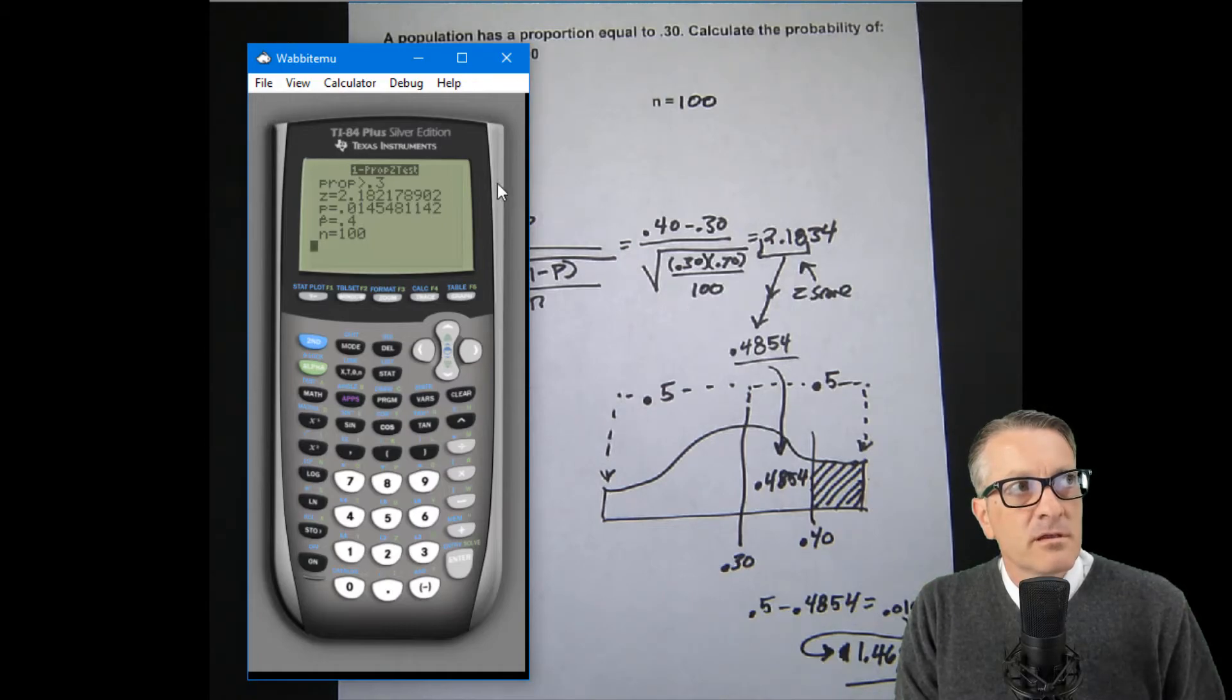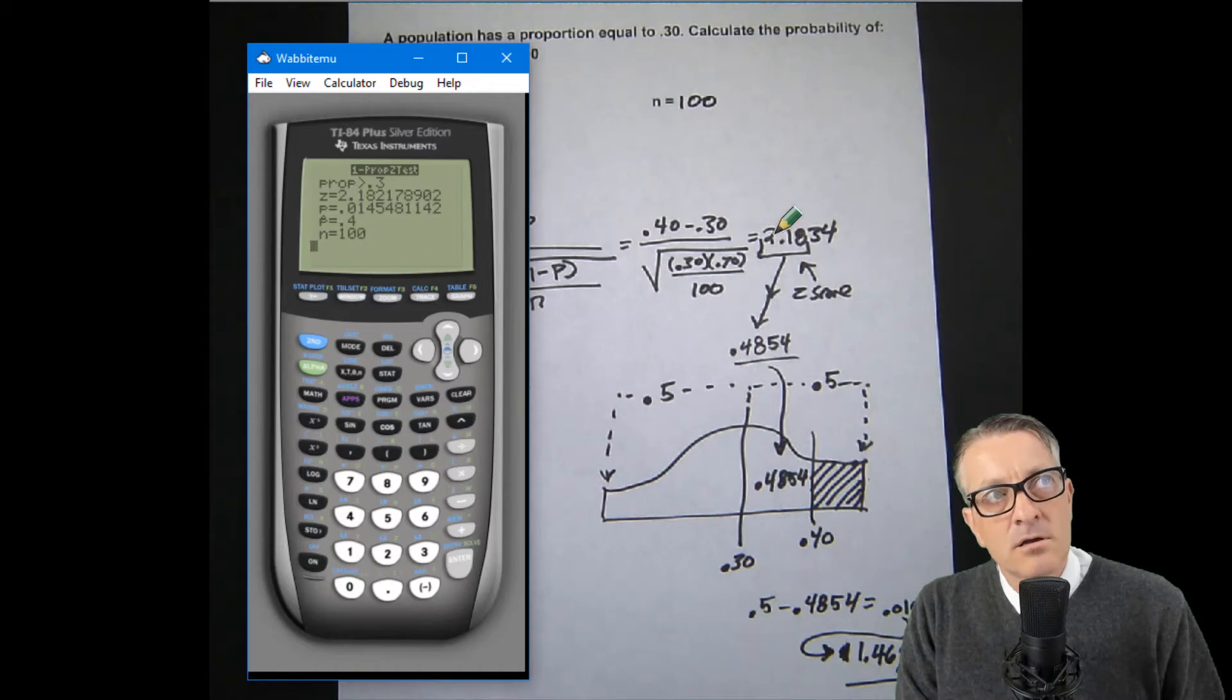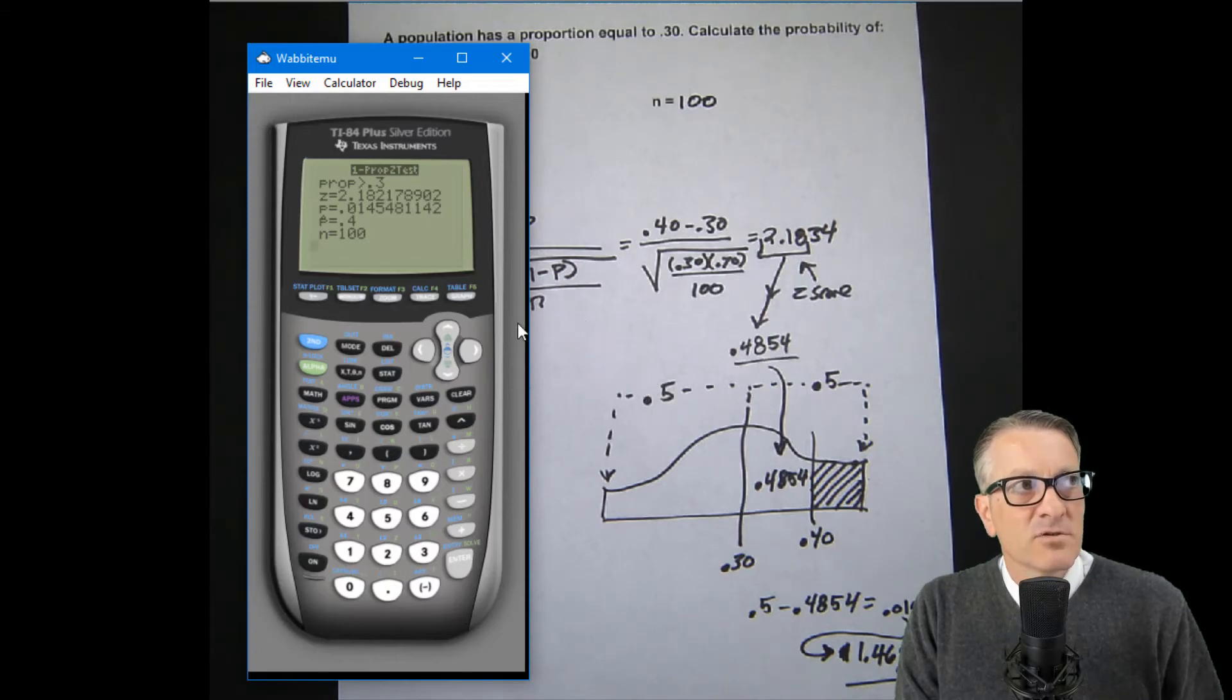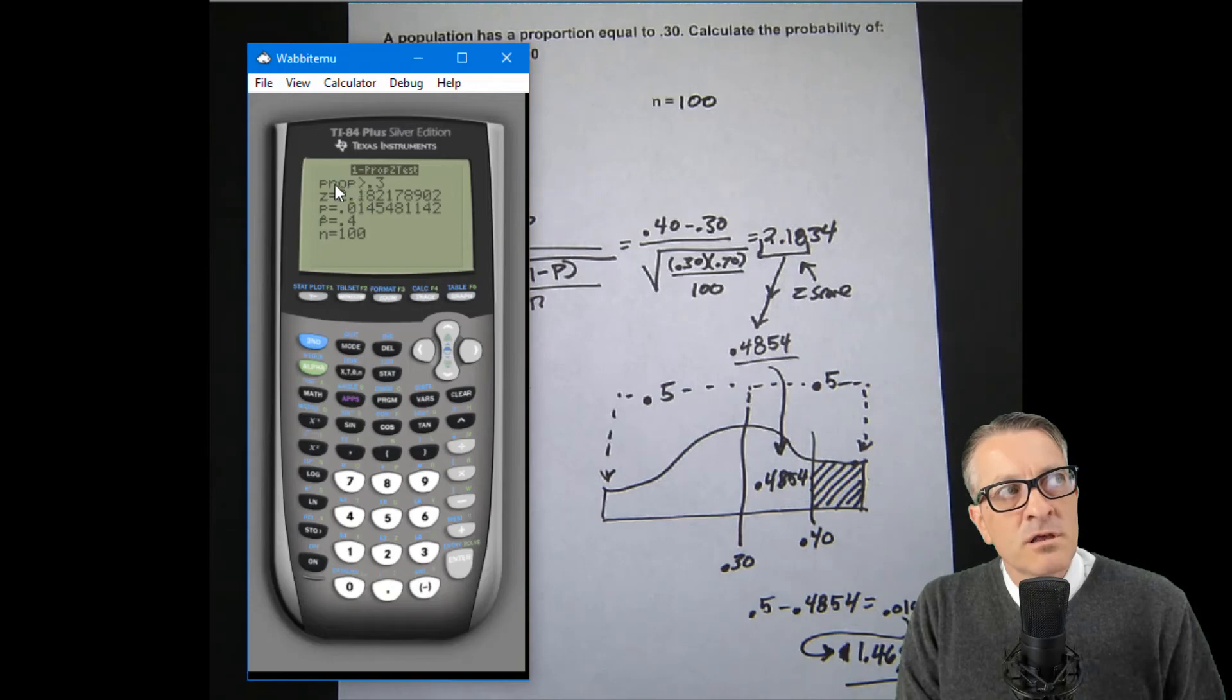Then we get on to calculate, and what's nice is we get the same answer. There's always rounding involved in our calculations by hand. This table only goes out to two places, so there's always a little bit of lack of precision when we do it by hand versus the calculator. I'm guessing the calculator is slightly more precise.